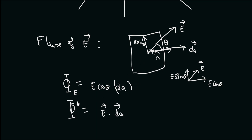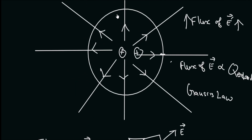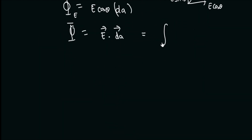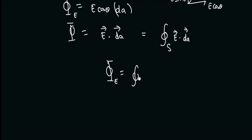Since in this case we are taking a sphere, it will be a closed surface. For Gauss's law, we will always take closed surfaces. So this will be the flux of the electric field through any closed surface.